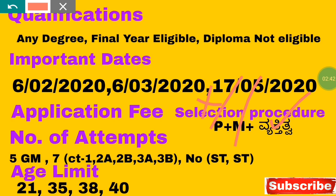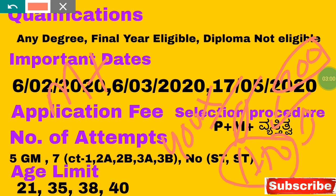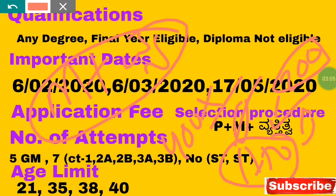Prelims is of a qualifying nature with a total of 400 marks. Mains carries a total of 750 marks, and the Mains score is considered for merit. The Viva/Interview carries 200 marks. The final merit list is based on Mains and Viva scores combined.